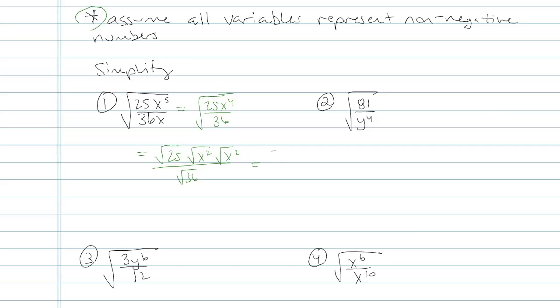Let's simplify that. On top, square root of 25 is 5, square root of x squared is x, square root of x squared is x again, and then it's all on top of 6. So my final result is 5x squared over 6.